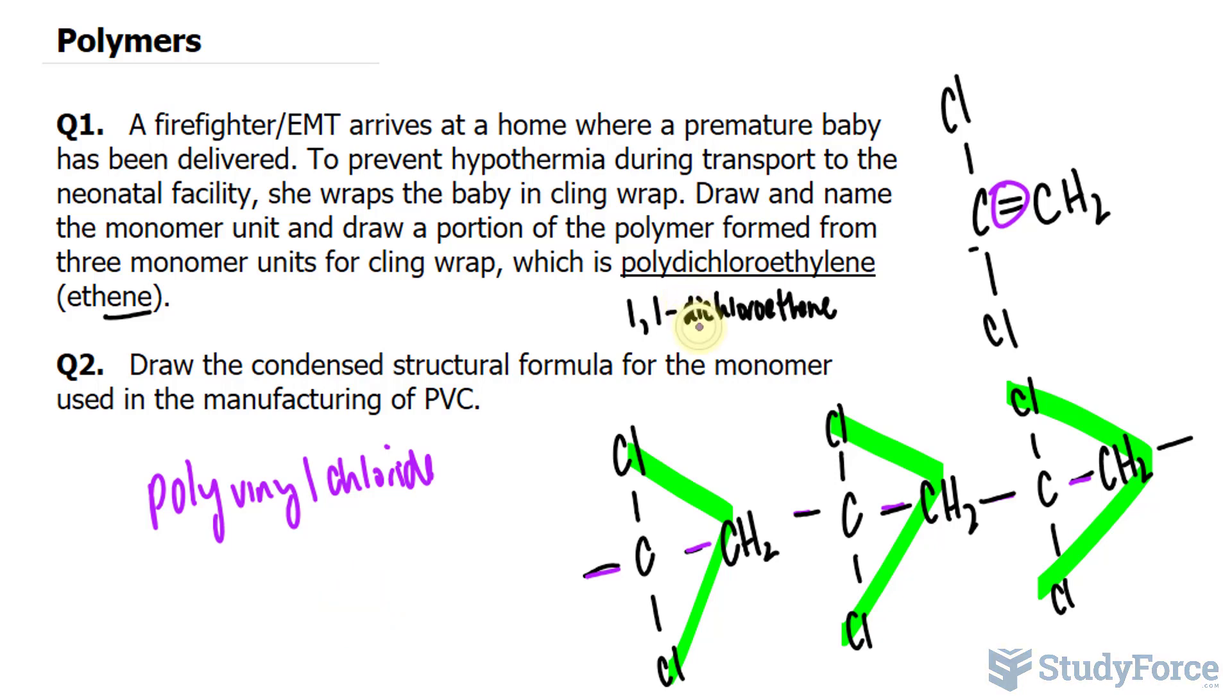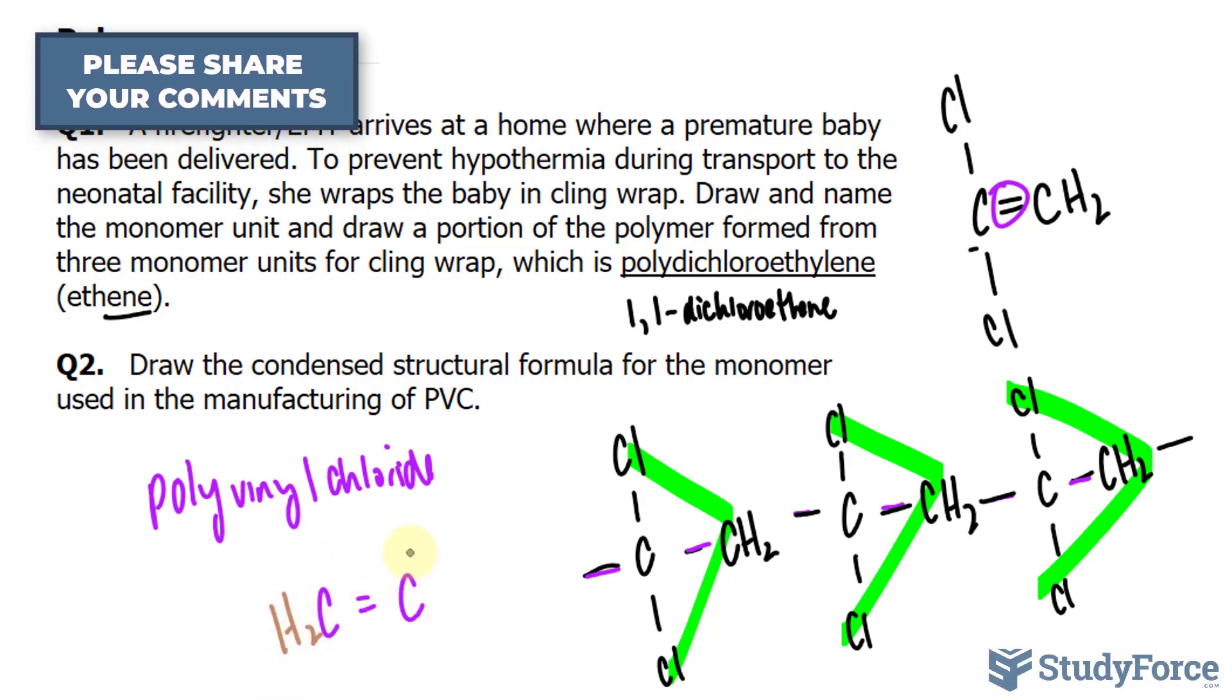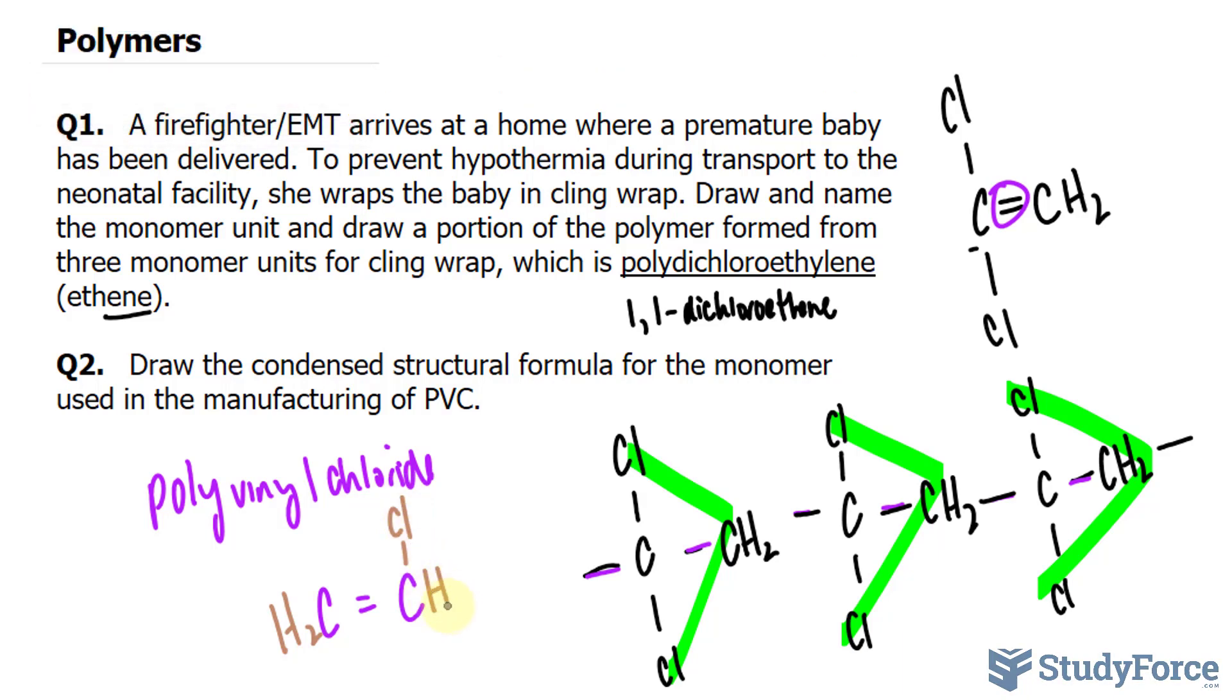Unlike in the first one, it's not dichloro, it's just one chlorine. So we have C double bond with C, and we have one chlorine on one of the carbons. So this should be CH2, and this should be one chlorine and a hydrogen. So that's what the monomer looks like.